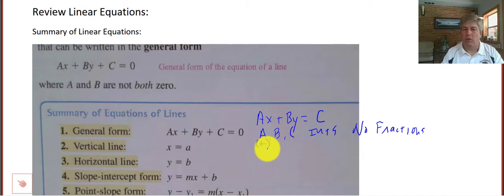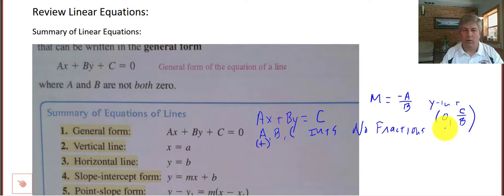So also in this format, a couple of notes that are helpful. Slope, we know slope is m, we write that as m quite a bit. Slope is the opposite of a over b if we're in standard form. And our y-intercept is the ordered pair, zero, c over b. And remember, we always want that y-intercept written as an ordered pair with that x-coordinate equal to zero.